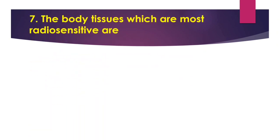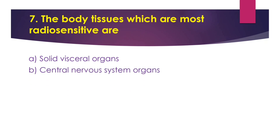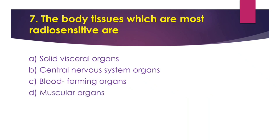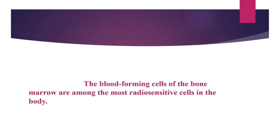Question number 7: The body tissues which are more radio-sensitive are - Option A - Solid visceral organs. Option B - Central nervous system organs. Option C - Blood forming organs. Option D - Muscular organs. The answer is Option C - Blood forming organs. The blood-forming cells of the bone marrow are the most radio-sensitive cells in the body.